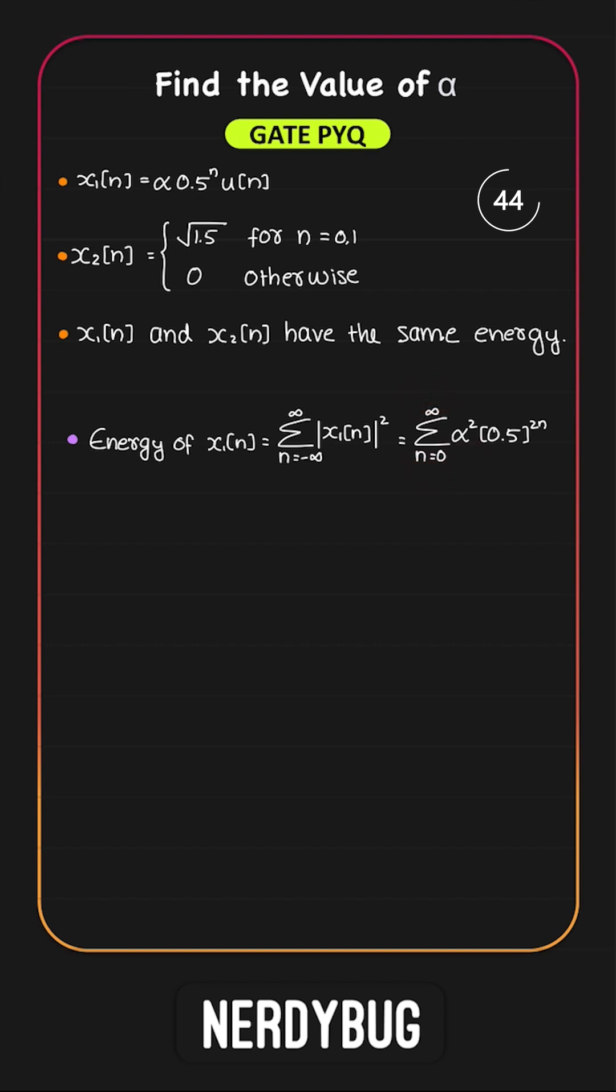Alpha square is a constant, it can come out of the summation. 0.5 to the power 2 is 0.25. This is the summation of 0.25 to the power n where n can take any value from 0 to infinity.